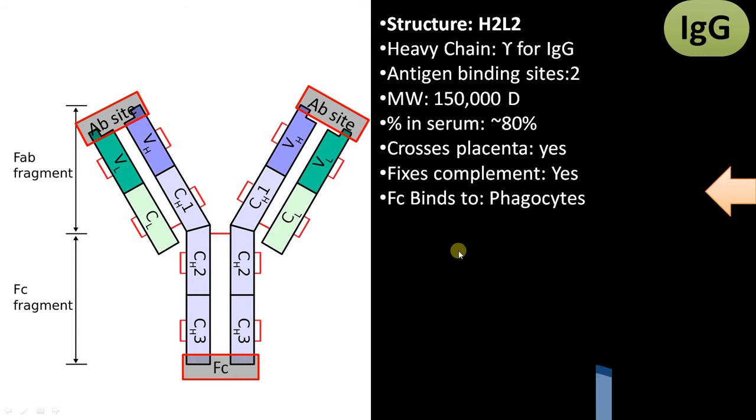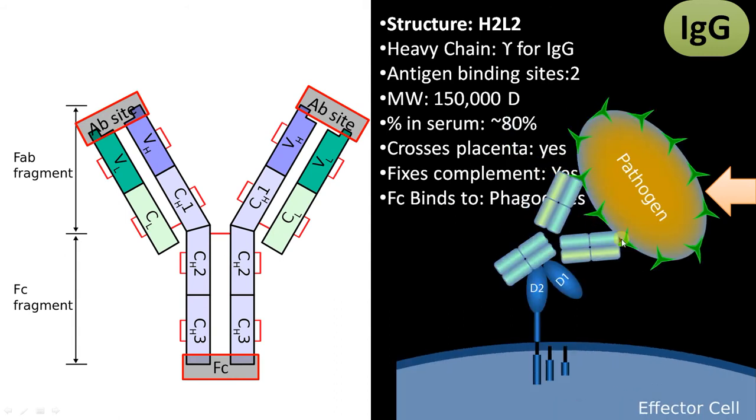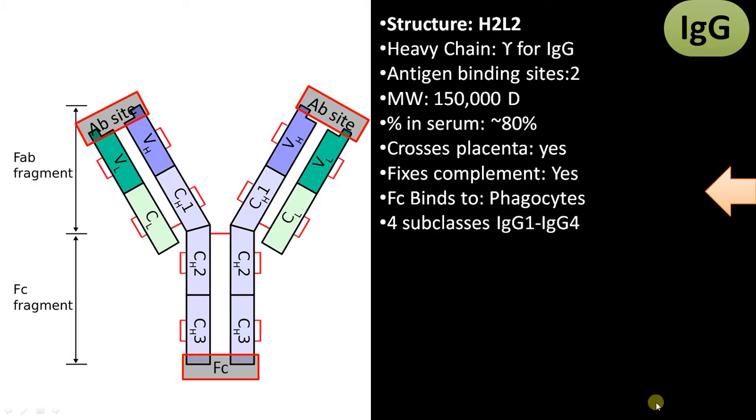The Fc region can bind to phagocytes. This is the Fab region or antigen binding region bound to the pathogen. The Fc region can bind to professional phagocytes like monocytes, macrophages, and dendritic cells. Pathogen-bound IgG can activate these phagocytes. There are four subclasses, IgG1 to IgG4, where IgG2 is directed against encapsulated bacteria.